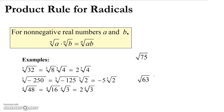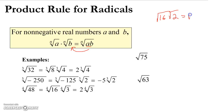This is called the product rule for radicals. For non-negative numbers a and b, if you take the nth root of a times the nth root of b, it's the same thing as taking the nth root of a times b as the radicand. So you can basically combine two square roots — you can put them both under the radical sign, or go the opposite direction. For example, the square root of 16 times the square root of 2 is the same thing as the square root of 32. You can go either way.